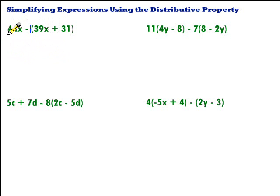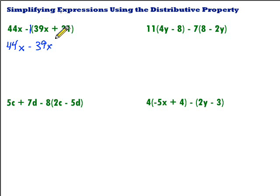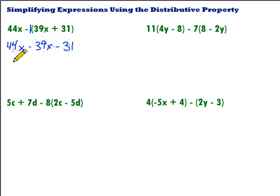We bring down the 44x — we're not going to do anything with that. Then negative 1 times 39x gives us negative 39x. Then negative 1 times positive 31 gives us negative 31. Now we've gotten rid of the parentheses, so we can combine like terms to simplify. Like terms are things that have either the same variables or lack of variables. In this case, we have two x terms: 44x and minus 39x.